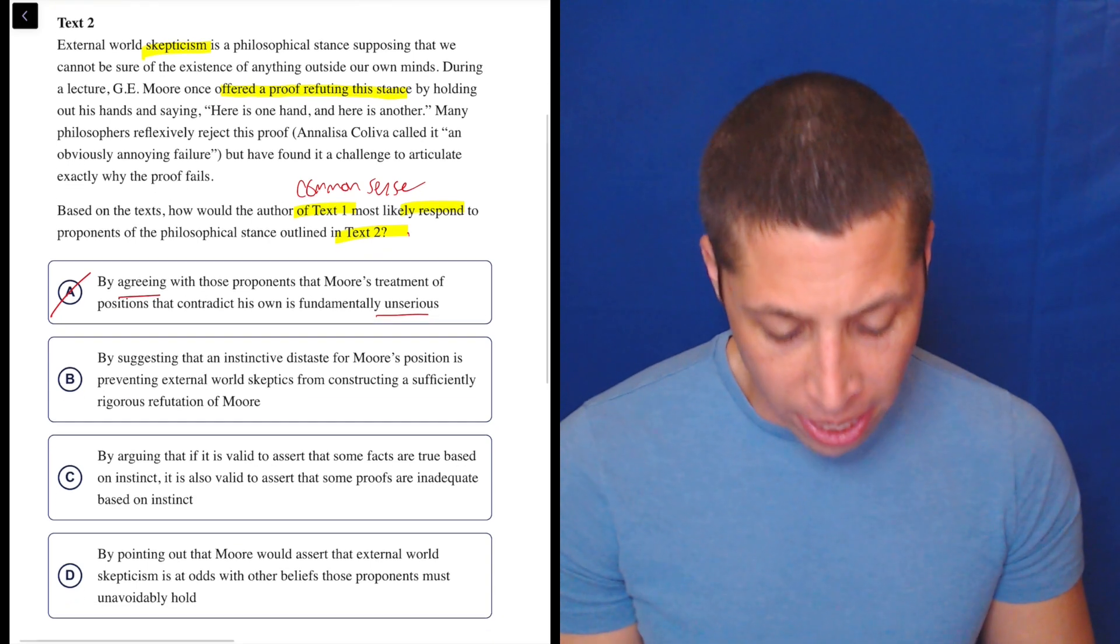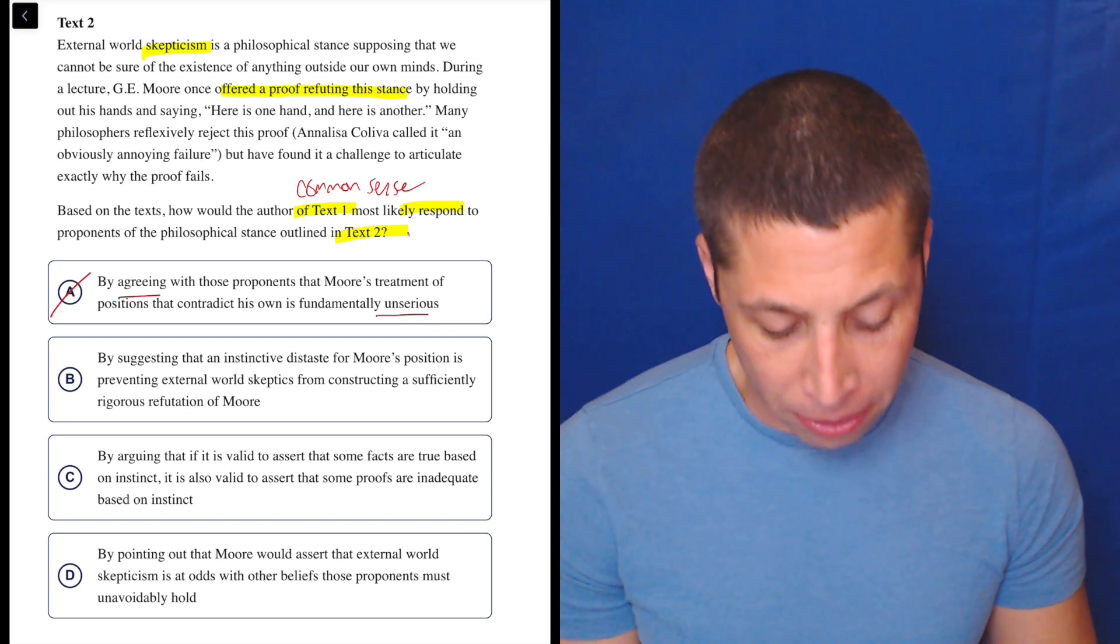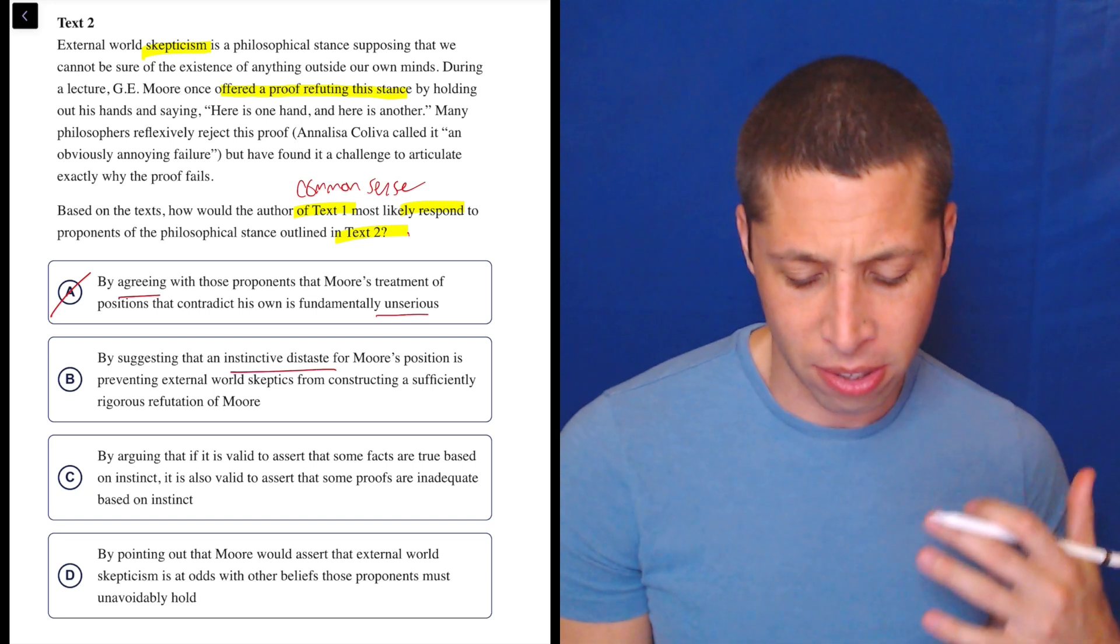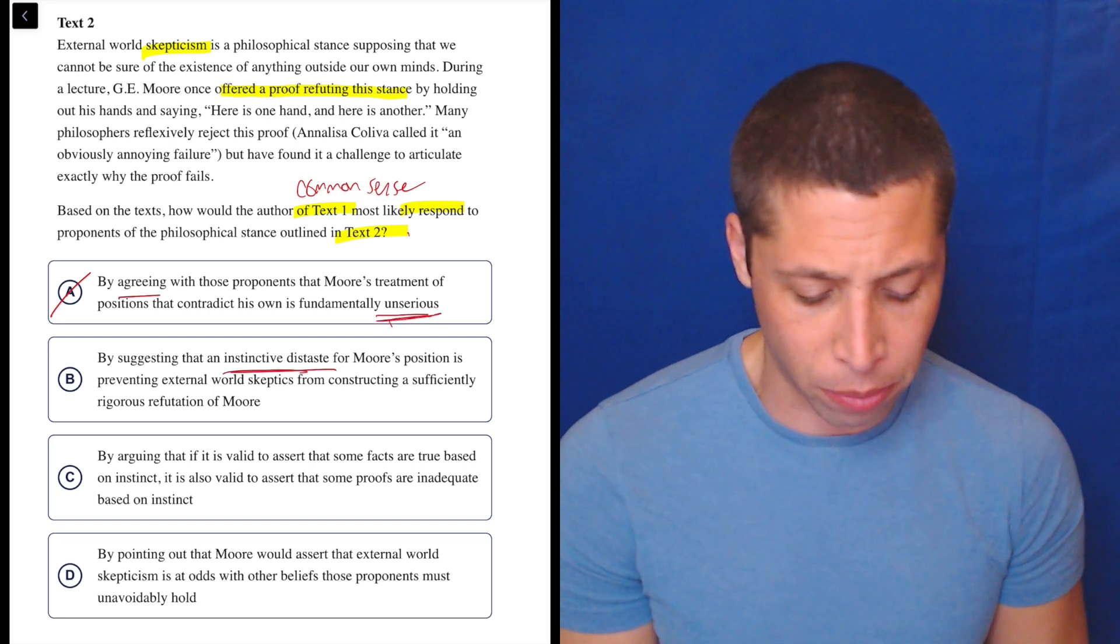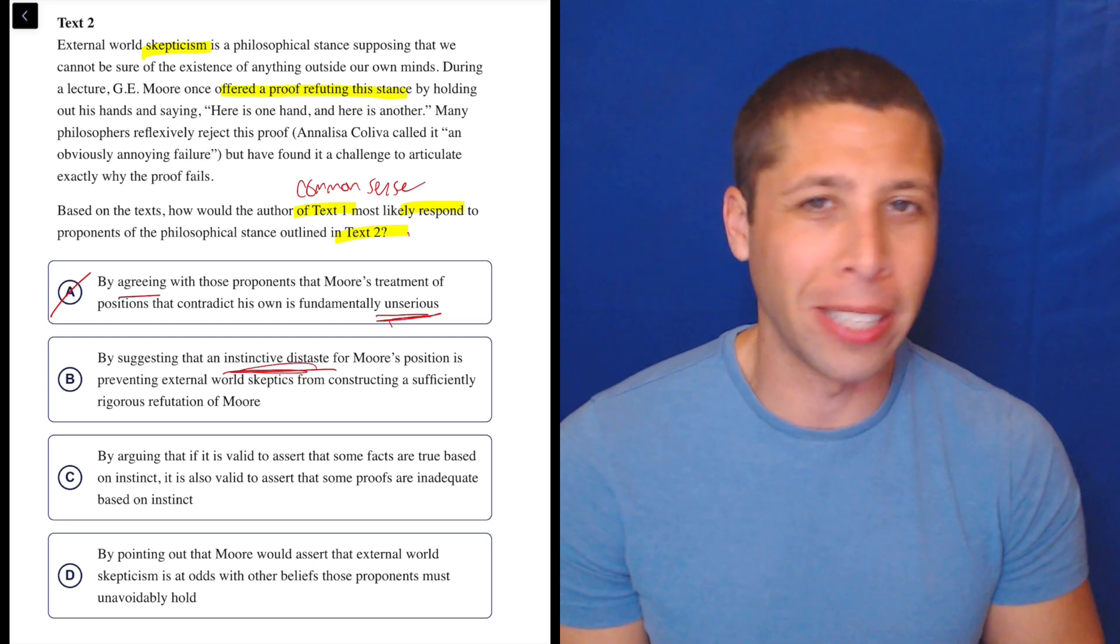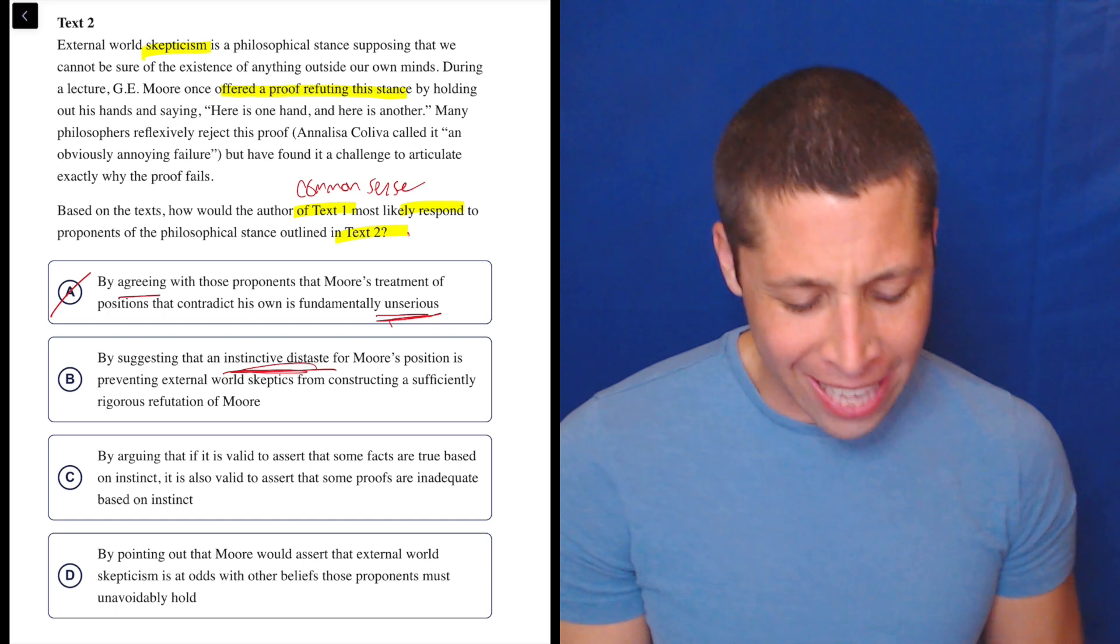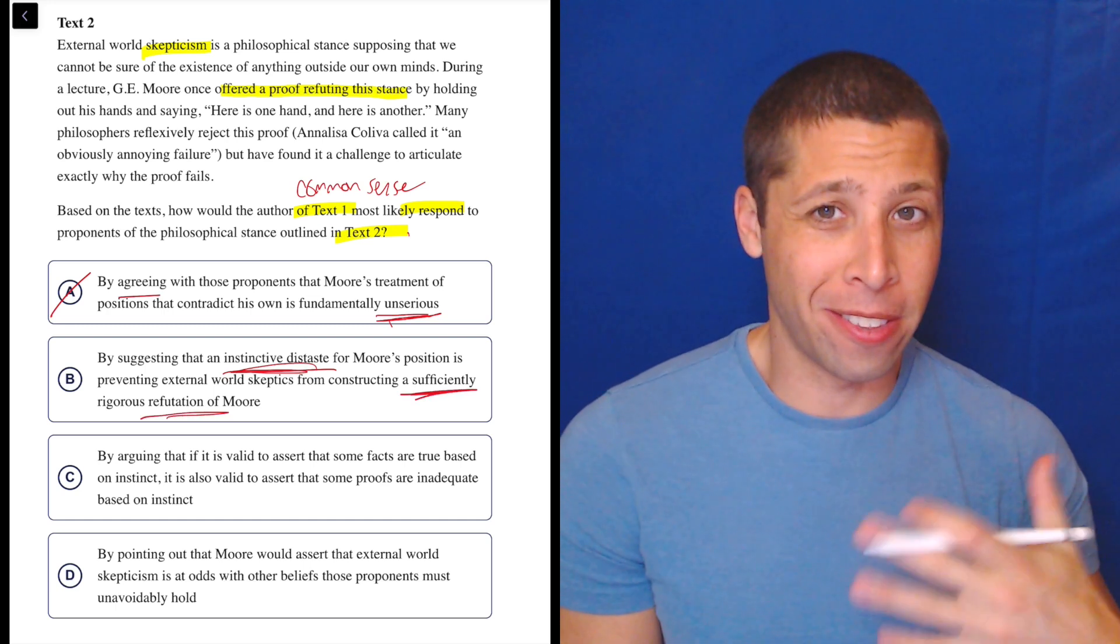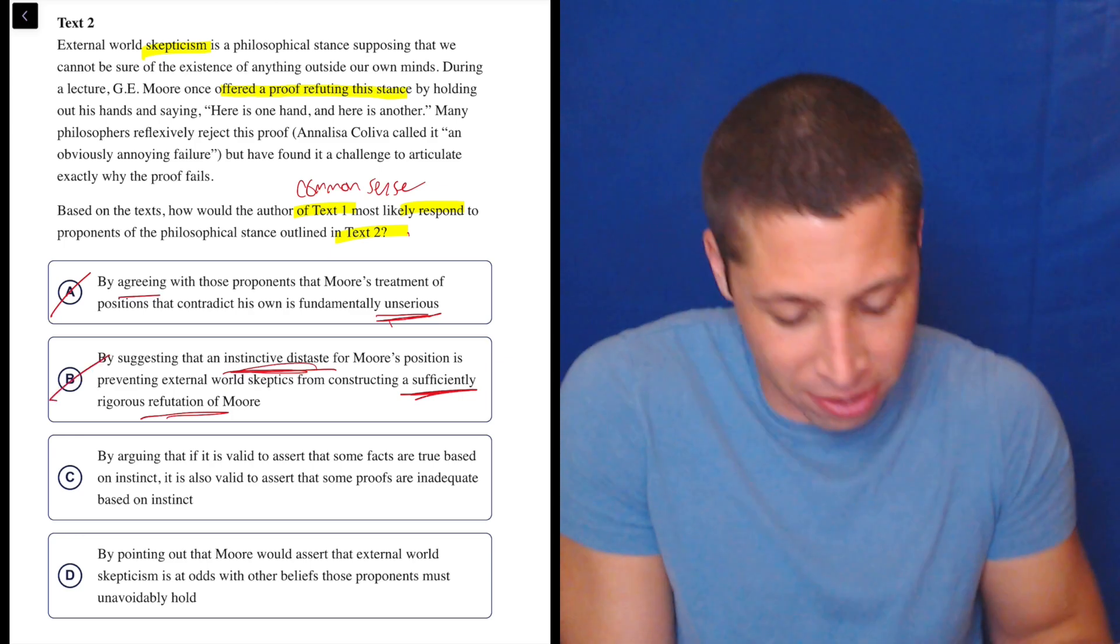Let's look at B. By suggesting that an instinctive distaste for Moore's position is preventing external world skeptics from constructing a sufficiently rigorous refutation of Moore. So an instinctive distaste, they just don't like him? Again, that sounds like the word unserious. It's just a fancier way of putting it. It means that somehow you just have like a bad feeling about a person. And so the reason they can't produce a refutation of him is just they're blinded by hatred of the guy? No, like, I don't, this doesn't even make sense.